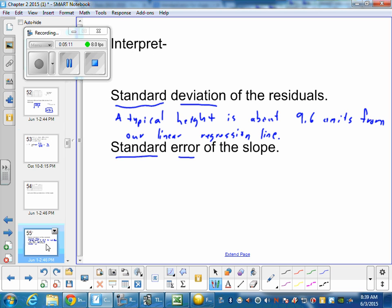So when we interpret this, a typical slope will be about 0.79 from our sample slope for predicting height.